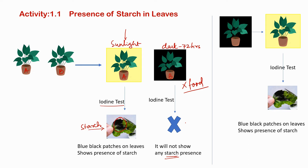There is an absence of starch here because we kept the plant in the dark. Without sunlight, photosynthesis cannot occur, and without photosynthesis, the plant cannot make food.